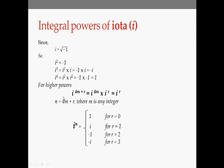For higher powers of IOTA, we write the exponent n as 4m plus r, where m is any integer and r takes values 0, 1, 2, or 3. This means i^n equals i^(4m) times i^r. Since i^(4m) is just i⁴ multiplied m times, and each i⁴ equals 1, the whole term i^(4m) equals 1. So i^n simply reduces to i^r, which gives 1, i, minus 1, or minus i for r equal to 0, 1, 2, and 3 respectively.